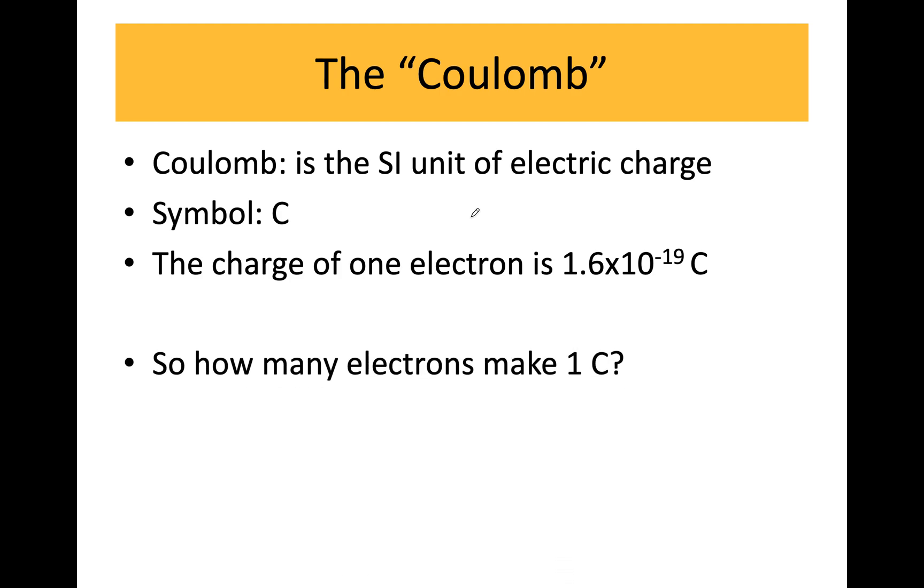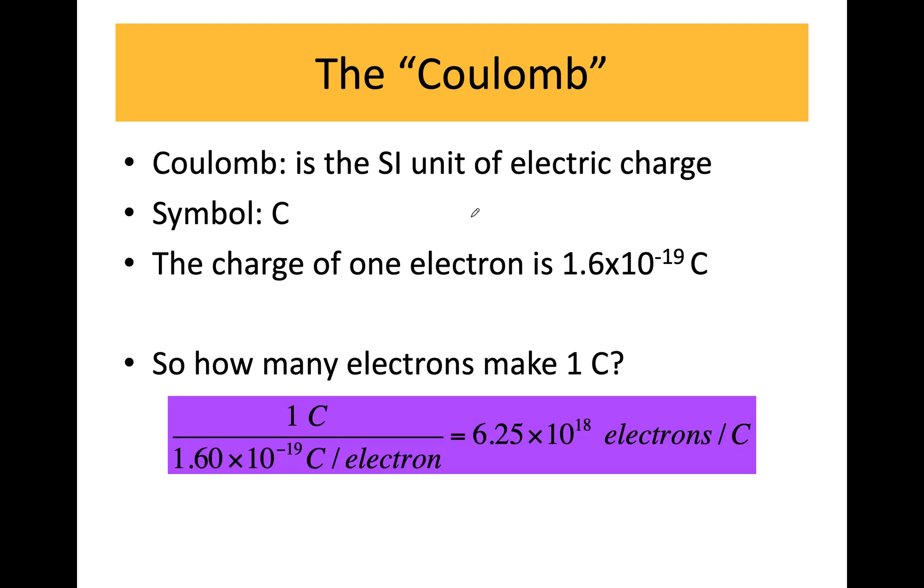So if you want to know how many electrons make one coulomb, you take the one coulomb, and you can divide it by the charge of an electron. That will tell you 6.25 times 10 to the 18. That's a lot of electrons.